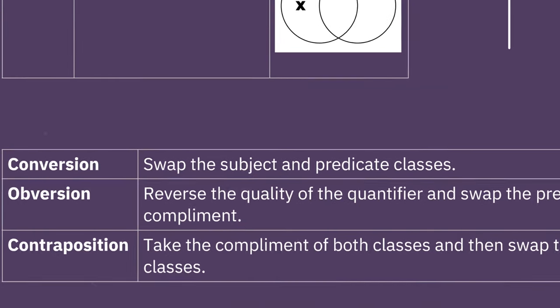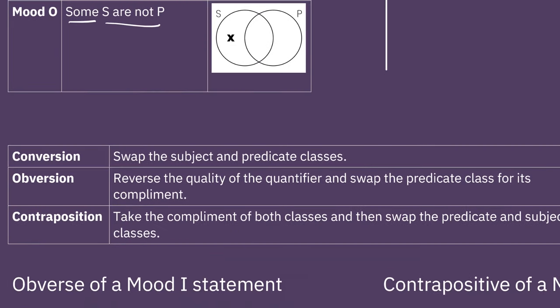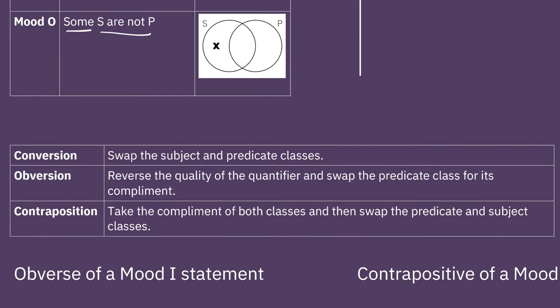But let's get to how we can change these sorts of statements. So we have three basic methods: conversion, obversion, and what we call contraposition. We use these whenever we make what we call immediate inference arguments. Those are going to be two-line arguments where you have first the initial statement, which is any categorical statement, and then we immediately want to know if we can draw a conclusion. And the conclusion will be either the converse, the obverse, or the contraposition of that statement.